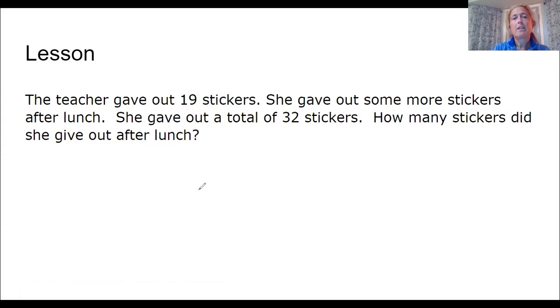Alright, so to make our equation first because we always want an equation. The teacher gave out 19 stickers. Okay, so we know that she gave out 19. We also know that she gave out a total of 32. But what we don't know is how much she gave out after lunch. So that's our unknown. So we're going to say 19 plus this unknown number, right? This unknown number equals, what's our total? 32.